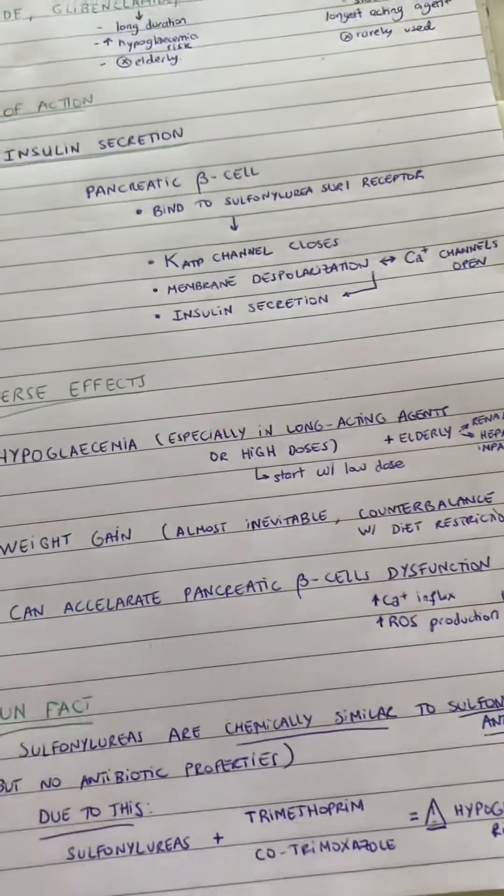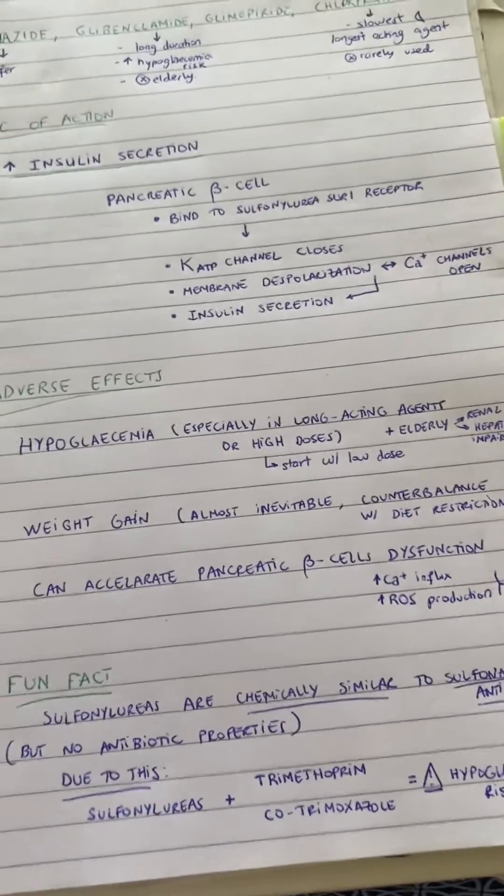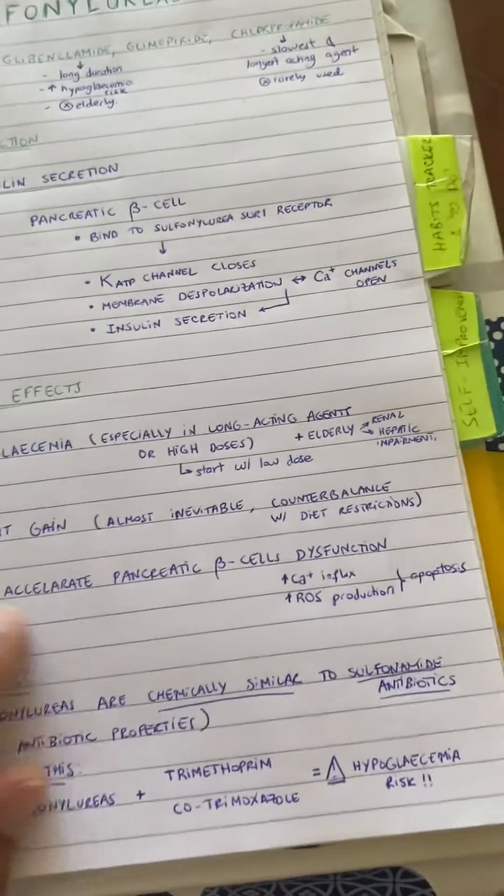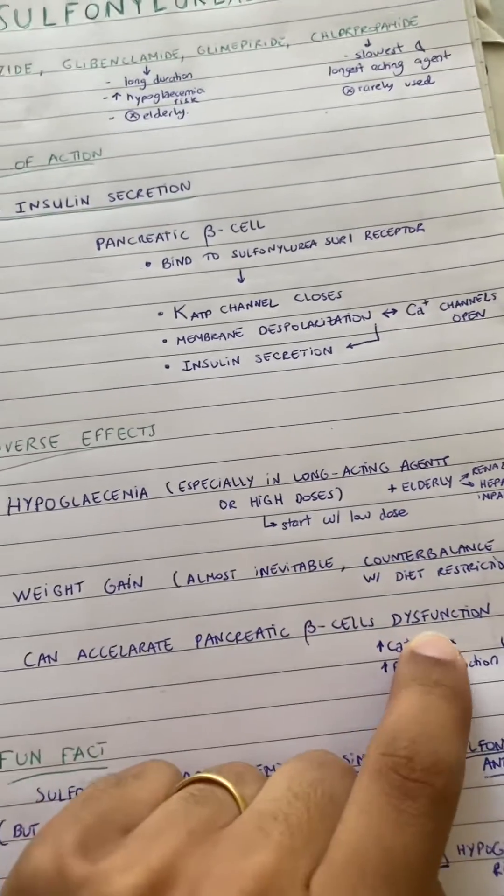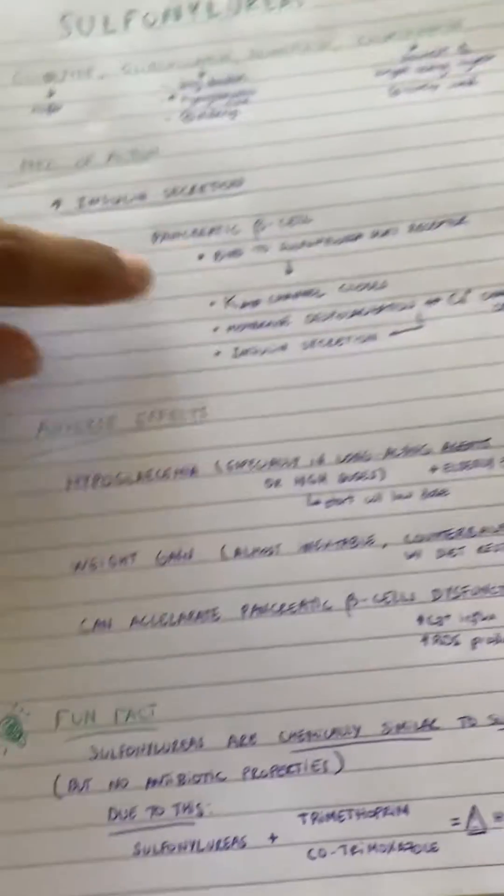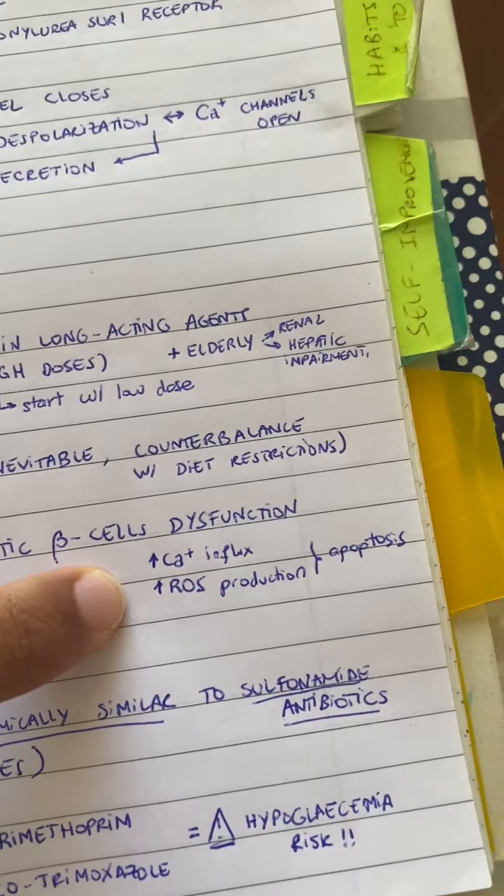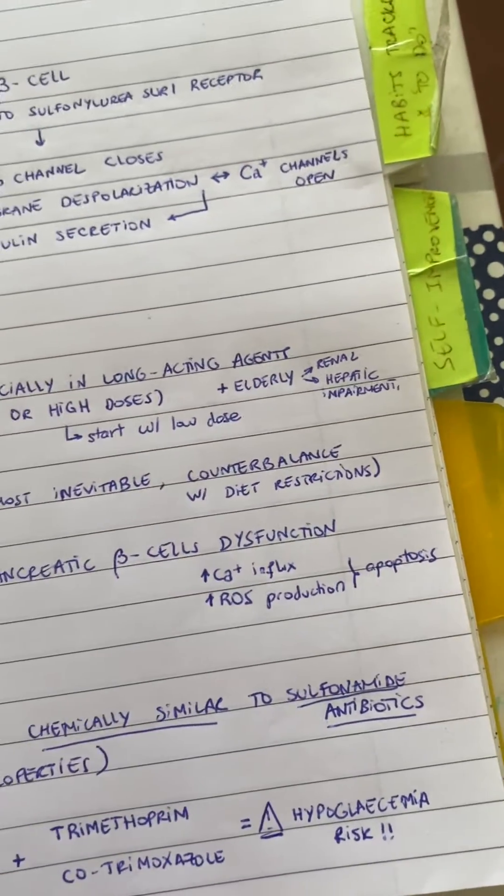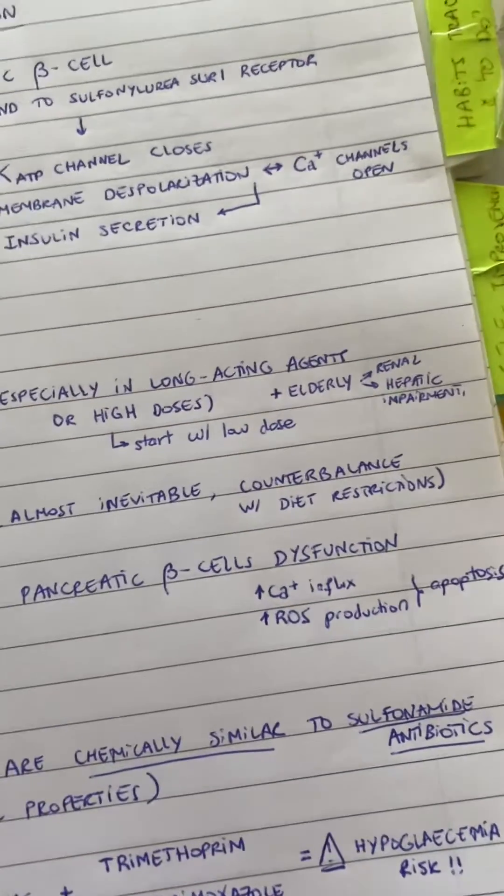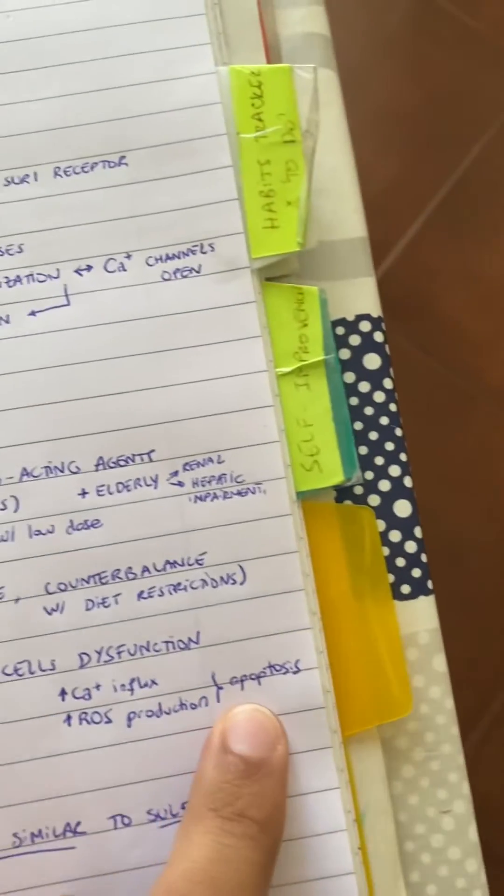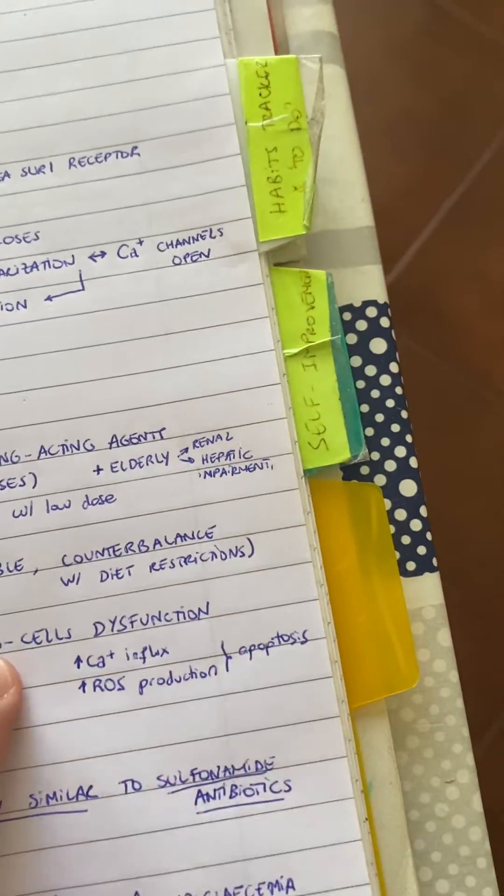And also, sulfonylureas—some clinical evidence says that they can accelerate pancreatic beta cell dysfunction. Why does this happen? Basically, we've seen that they promote calcium influx in the cells, and this will lead to reactive oxygen species to be produced, which can lead to apoptosis of the beta cells.